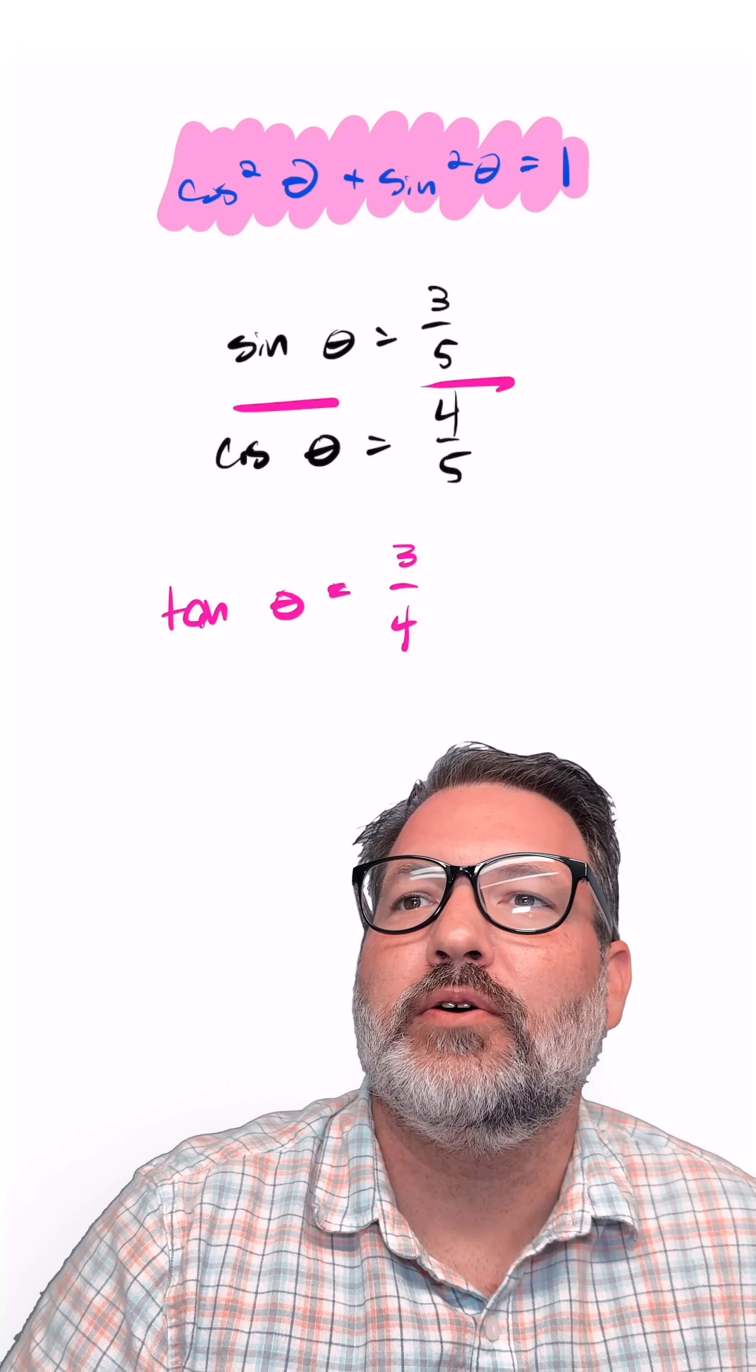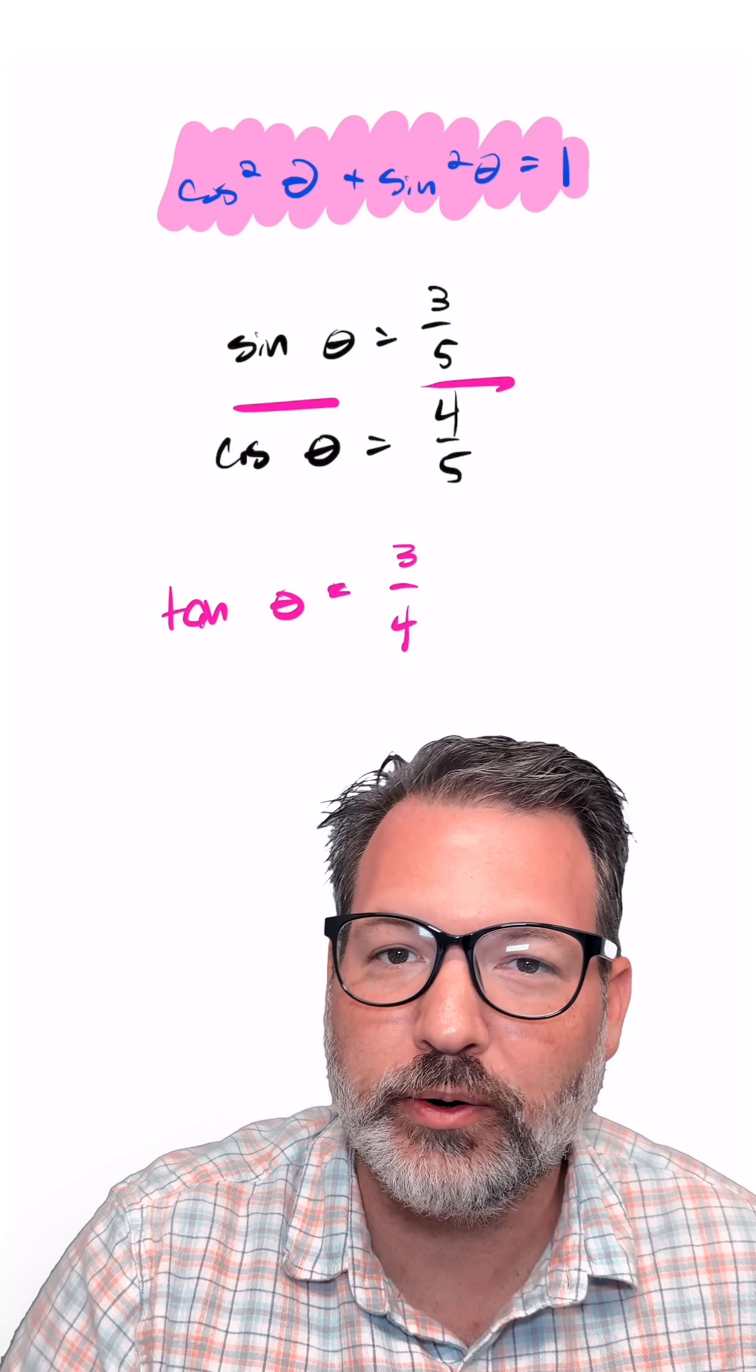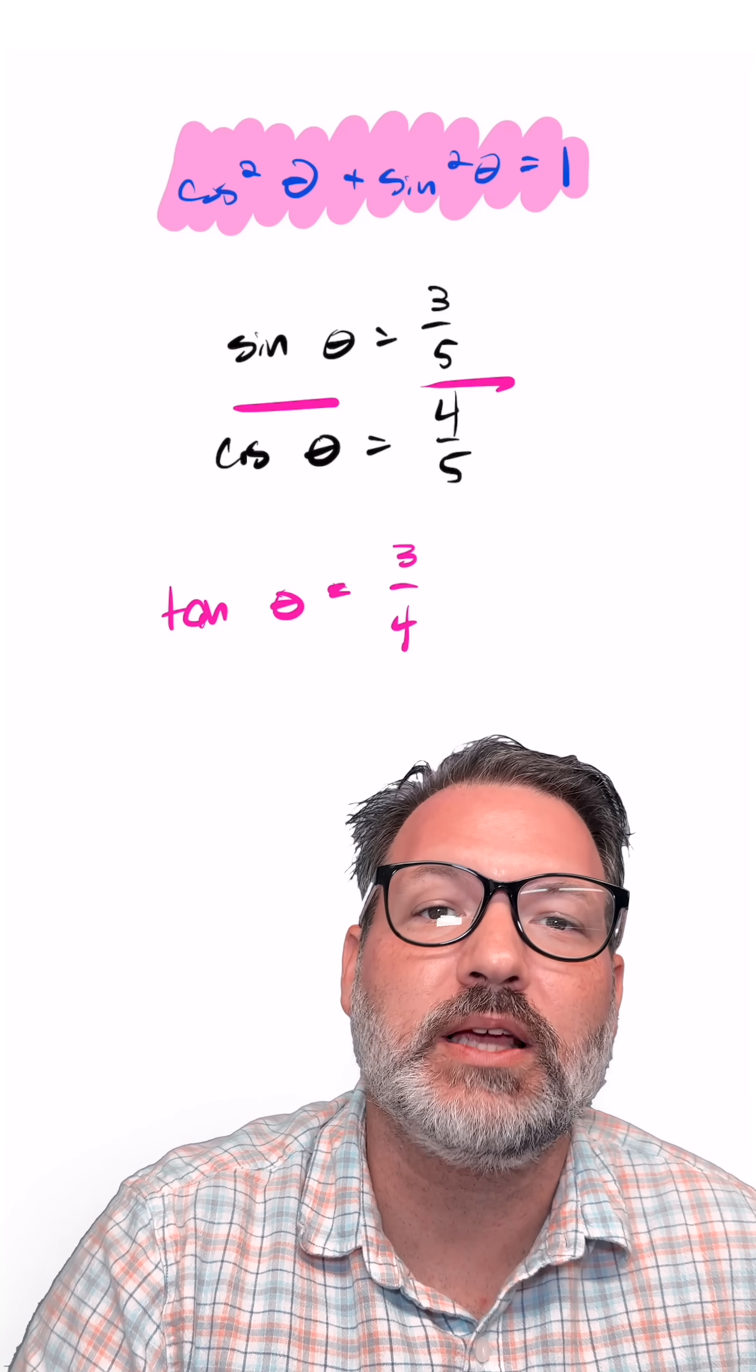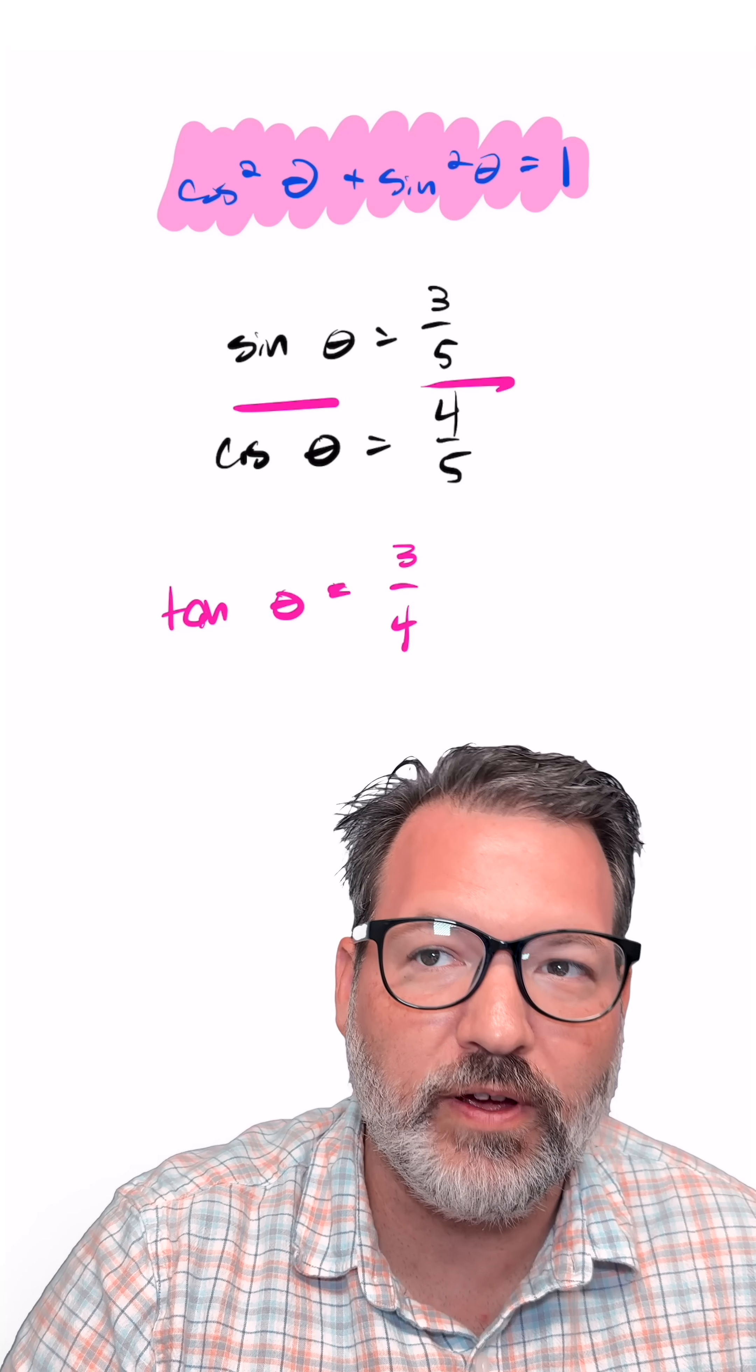Now, like I said at the top of the video, this is like the quick and dirty method. This is not rigorous at all. And in fact, the only reason it works is because there is some theta for which the sine of theta is 3 fifths